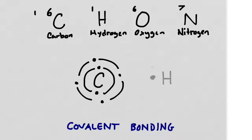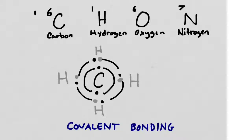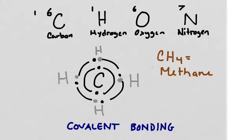Hydrogen also has one valence electron and needs one more to satisfy its octet rule, so you frequently see carbon and hydrogen bonded together. The two share one set of electrons. To fill the outermost shell of carbon, we need to add four hydrogen atoms. Once bonded, both the hydrogen atoms and the carbon atom are satisfied in terms of valence electrons — hydrogen has a full outer shell with two electrons, and carbon's outer shell is full with eight electrons. This molecule, CH4, is methane — also known as the gas you produce when you fart.